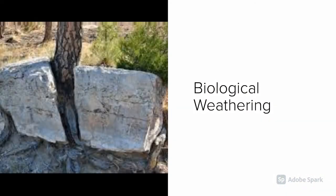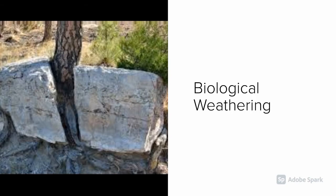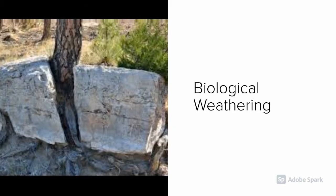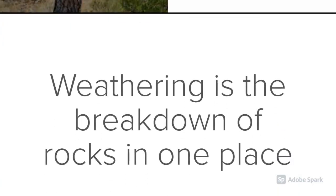Biological weathering happens when plants or animals grow through rocks. Often trees can grow through rocks, or animals can burrow into holes in the rocks, or lichen or moss can grow on the edge of the rock faces.